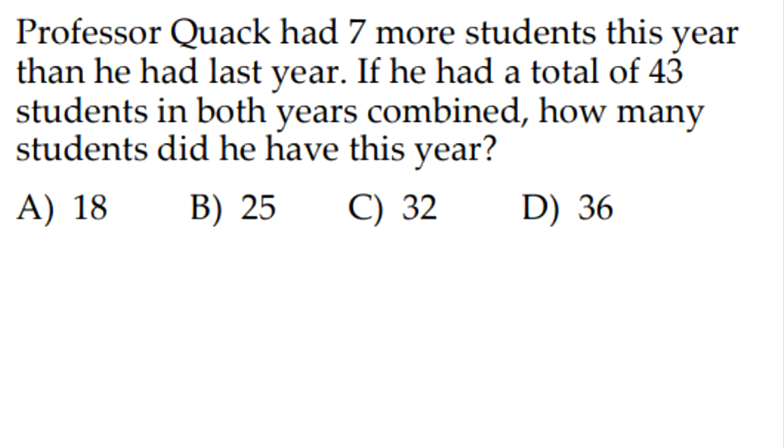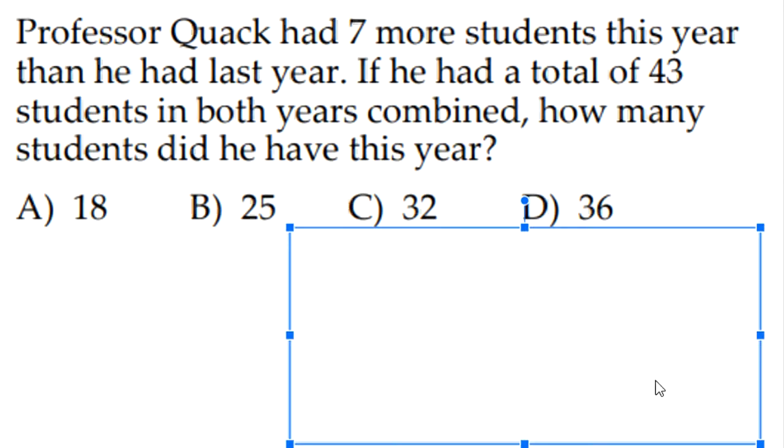The next question is: Professor Quack has 7 more students this year than he had last year. If he had a total of 43 students in both years combined, how many students did he have this year? So because he said 7 more students this year, if we subtract 7 from every answer and add it with their number before we subtracted 7, and we get 43, that would be your answer. So let's try A. 18 minus 7 is 11, 11 plus 18 is 29, not 43. Let's try B. 25 minus 7 is 18, 18 plus 25 is 43. So our answer is B, 25.